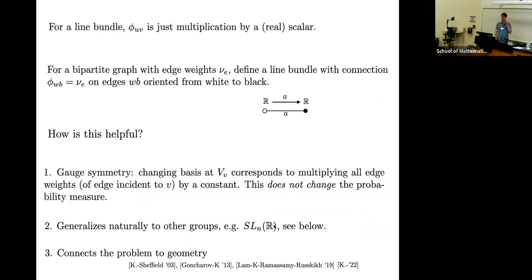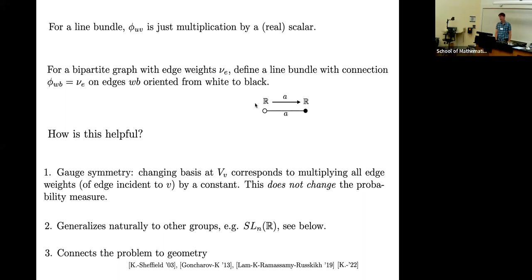When you have a line bundle — that is, you just have a one-dimensional vector space at each vertex — an isomorphism between two one-dimensional vector spaces is just a real number, a multiplication by a real scalar. That's the identification we make with the edge weight. So if your graph happens to be bipartite, you can orient the edges from the white vertex to the black vertex, and having a positive real edge weight just means that you have a distinguished isomorphism from the one-dimensional vector space at one vertex to the one at the other. The point is that it's a different point of view on what this data is — a bunch of edge weights.